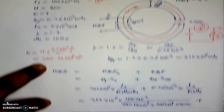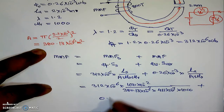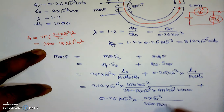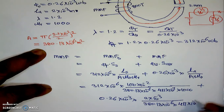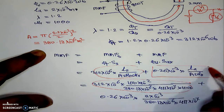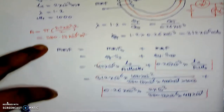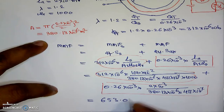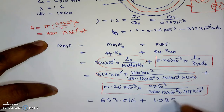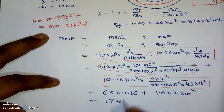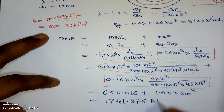The second term — for the air gap — is: φ_u × S_air = 0.26 × 10⁻³ × (2 × 10⁻³) / (380.13 × 10⁻⁶ × 4π × 10⁻⁷). This second calculation is found to be 1.088 × 10³. Adding both values, the total MMF is 1741.376 ampere-turns.